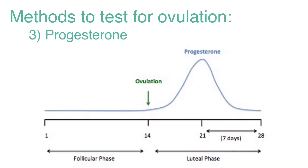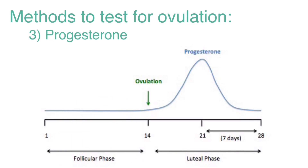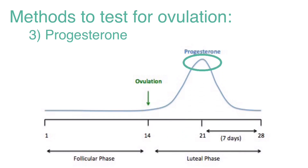The next test is progesterone. This is a simple, objective, reliable way to test for ovulation if appropriately timed. Progesterone is generally less than one in the follicular phase, slightly rises on the day of the LH surge, and peaks approximately seven to eight days after ovulation. A level over three implies ovulation has occurred.